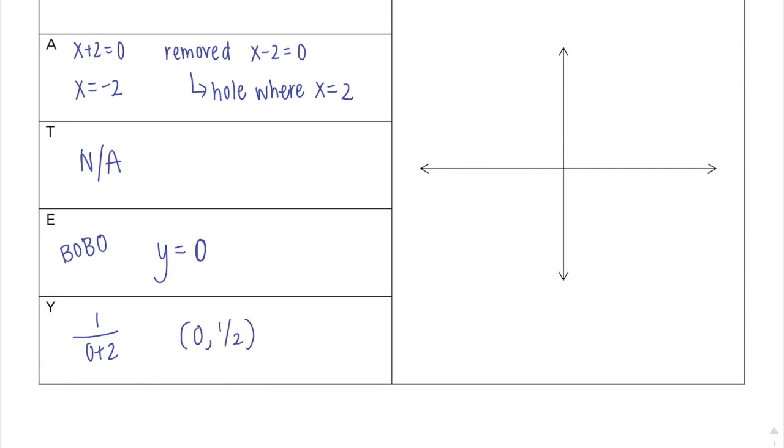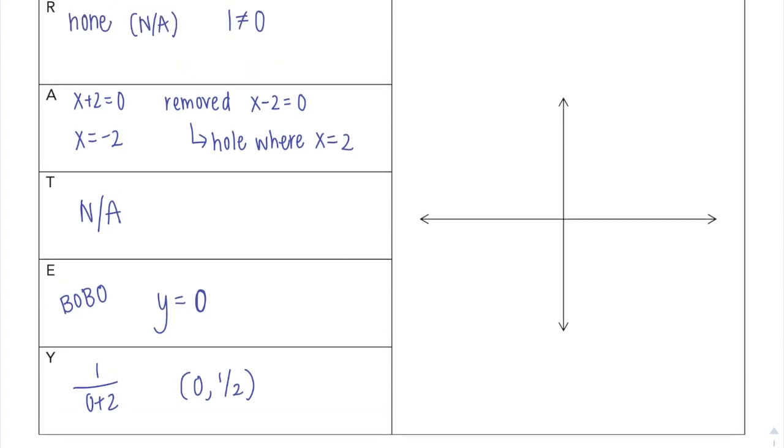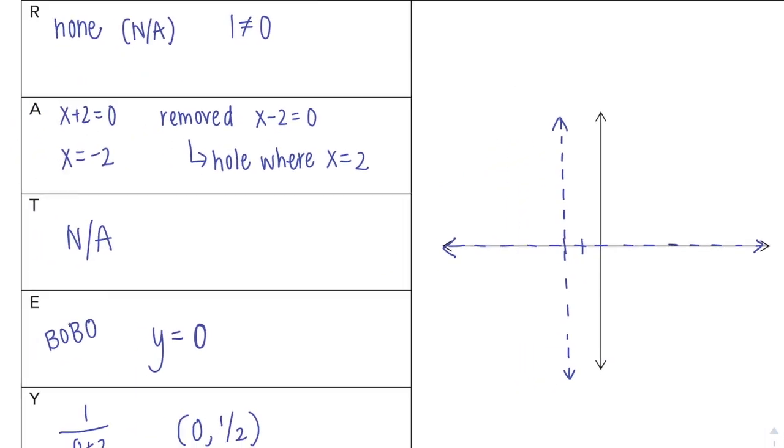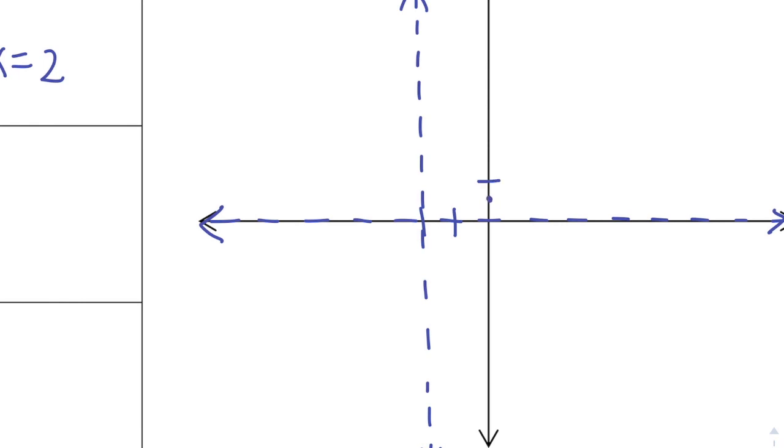And now I'm going to go over to my graph and grab those key features. So I have an asymptote at x equals negative 2, a vertical one. My horizontal asymptote is just the x-axis where y was 0. And I have a y-intercept at 0, 1 half. So if that's 1, 0, 1 half would be right here. It's going to do that.